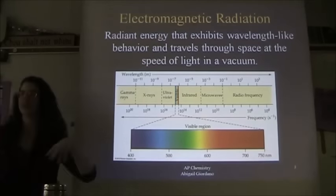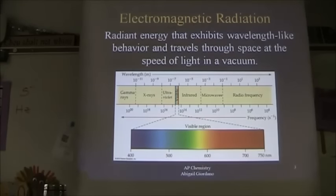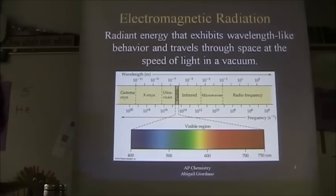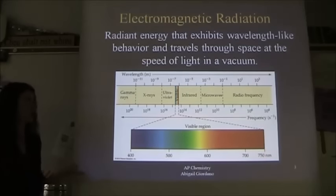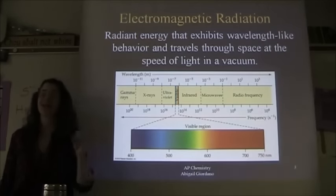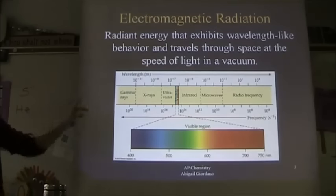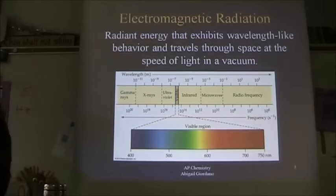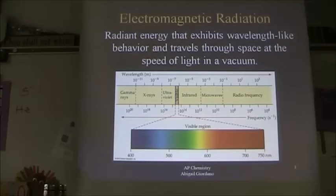Starting on the left of the spectrum, gamma rays is a term that should be familiar from Chem 1 — alpha decay, beta decay, gamma decay. Gamma rays are another type of radiation with very short wavelengths, high frequency, and high energy. You're mostly going to hear about this in connection with nuclear weapons or radioactive substances.